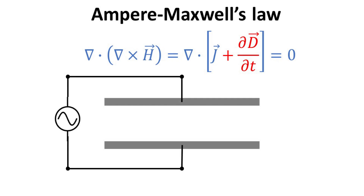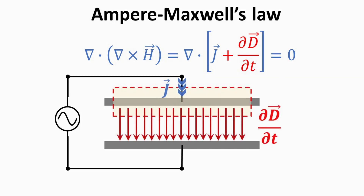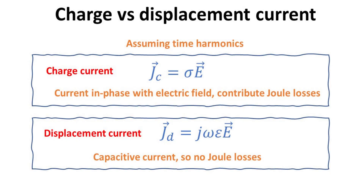Let's see what the divergence of the two currents means in the context of a capacitor wired to a time-varying voltage source. Taking an enclosed volume over the top capacitor plate, the charge current entering the top surface must balance the electric displacement current on the bottom surface of this volume. The charge current can only flow in a material with finite conductivity, while the displacement current flows in any dielectric medium. The charge current is in phase with the electric field, while the displacement current is not — it behaves as a capacitive current and does not account for joule losses.